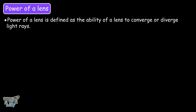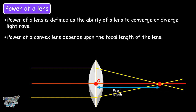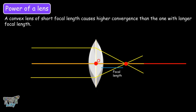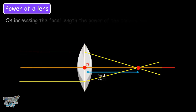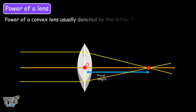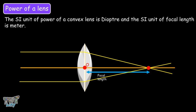The power of a lens is defined as the ability of a lens to converge or diverge light rays. Power of a convex lens depends on its focal length, and is defined as the reciprocal of its focal length. A convex lens of short focal length causes higher convergence than one with a longer focal length, so increasing the focal length decreases the power. Power is denoted by the letter P, and the power of a convex lens of focal length F is given by P = 1/F. The SI unit of power is the dioptre, and the SI unit of focal length is the metre.